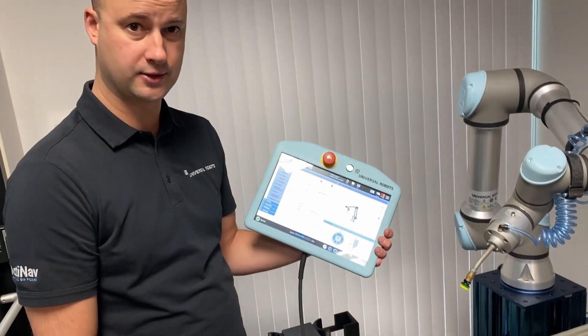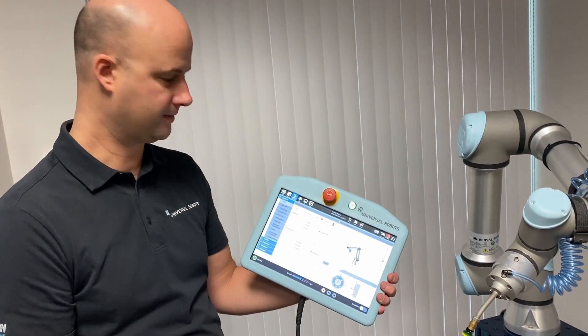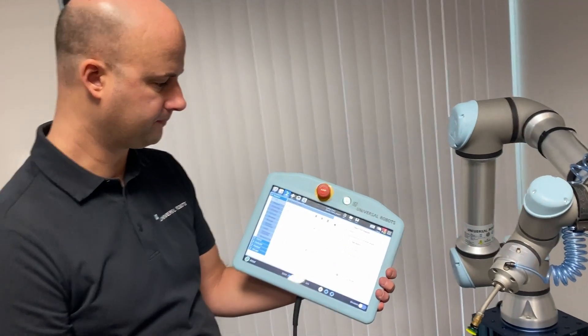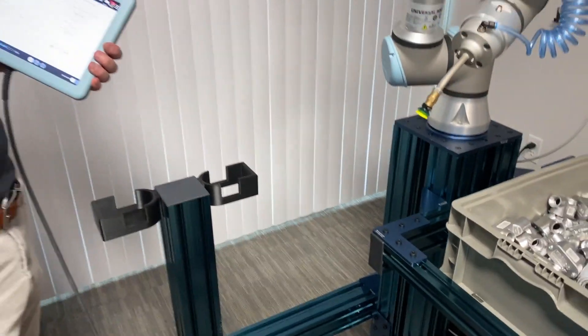Universal Robot makes that super easy because we have a TCP wizard. We just hit measure and find a sharp corner. We could use any corner; we'll use this corner right here.